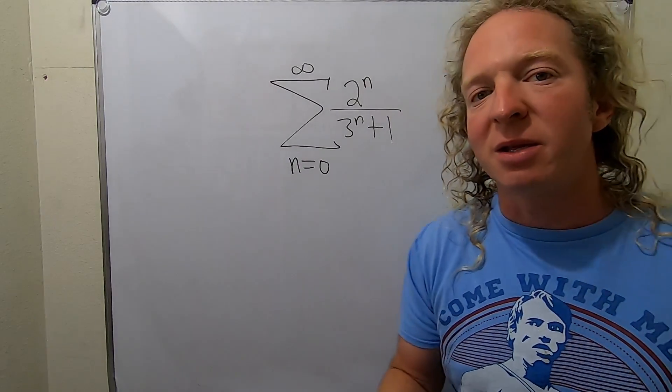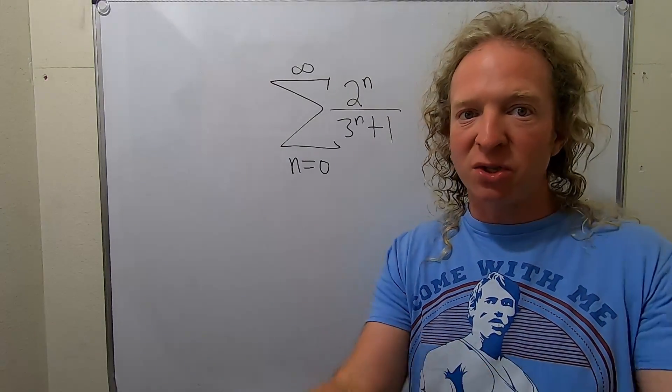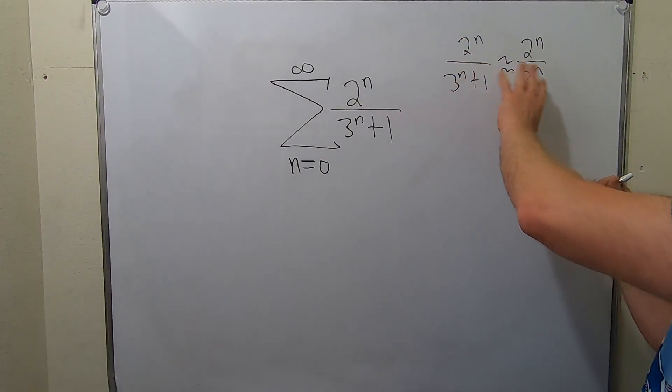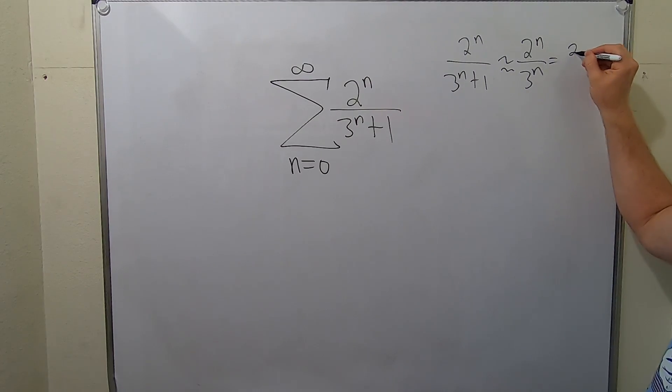And the reason you can do that is because when n is really big, the fact you're adding 1 to 3 to the n makes no difference at all. So you can ignore the lower degree terms and the constants. And this is really 2 thirds to the n.